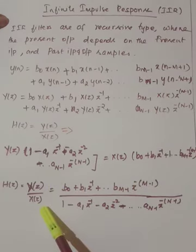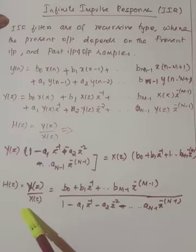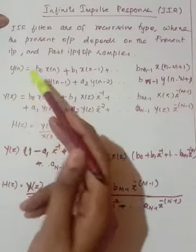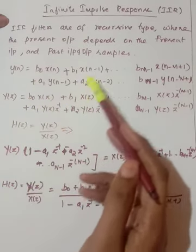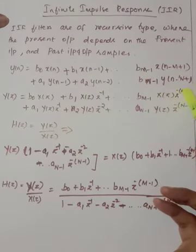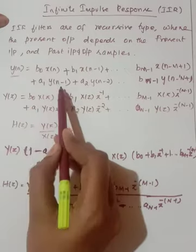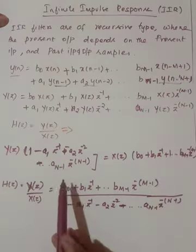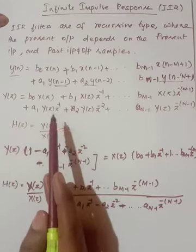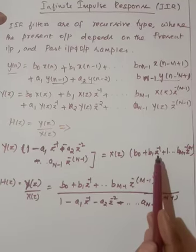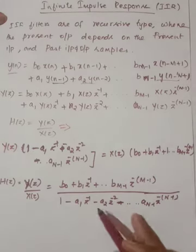Now we need to design the transfer function of the filter. The transfer function is the output by input, that is H(z) = Y(z)/X(z). Taking the Z-transform: Y(z) = b0·X(z) + b1·X(z)·z⁻¹ + ... + b_{m-1}·X(z)·z^{-(m-1)}. We depend only on past output samples. Grouping input on one side and output on the other, H(z) = Y(z)/X(z), and you will have the input coefficients in the numerator and output coefficients in the denominator.